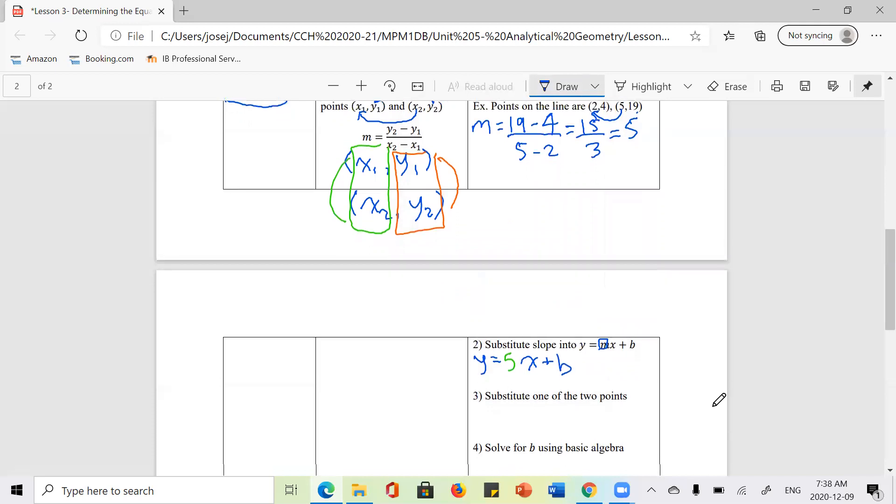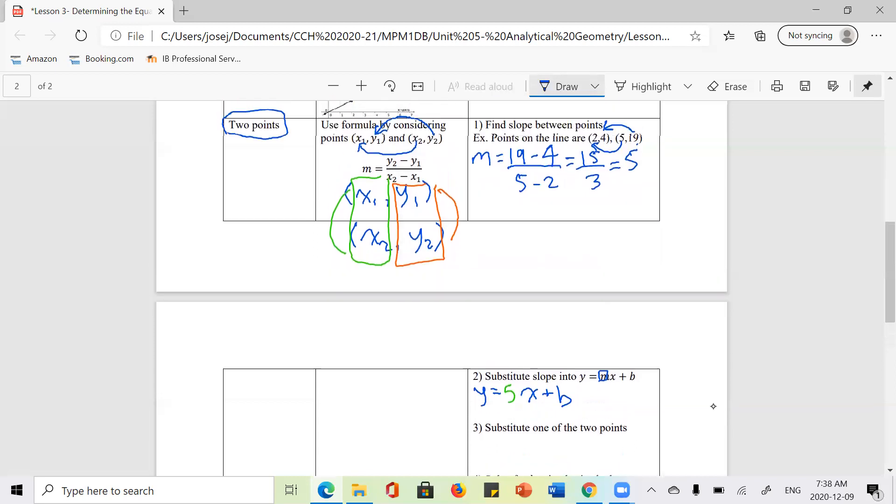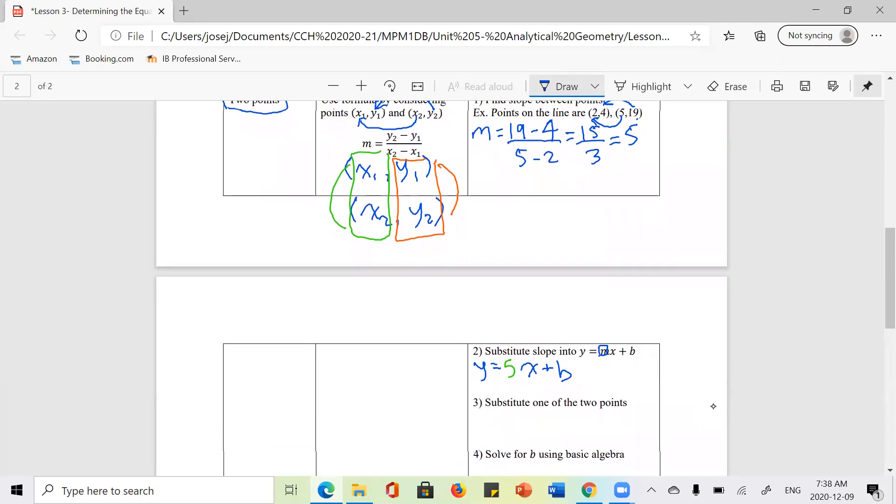So what we're going to do now is we are going to take one of the two points, and it doesn't matter which of the two points we have. We're going to take one of the two points and substitute it into this equation. The reason you're doing this is because we know that this line contains those two points. If a point is on the line, then it will satisfy the equation. So I'm going to pick 2 and 4 just because it's a slightly easier pair of numbers to work with.